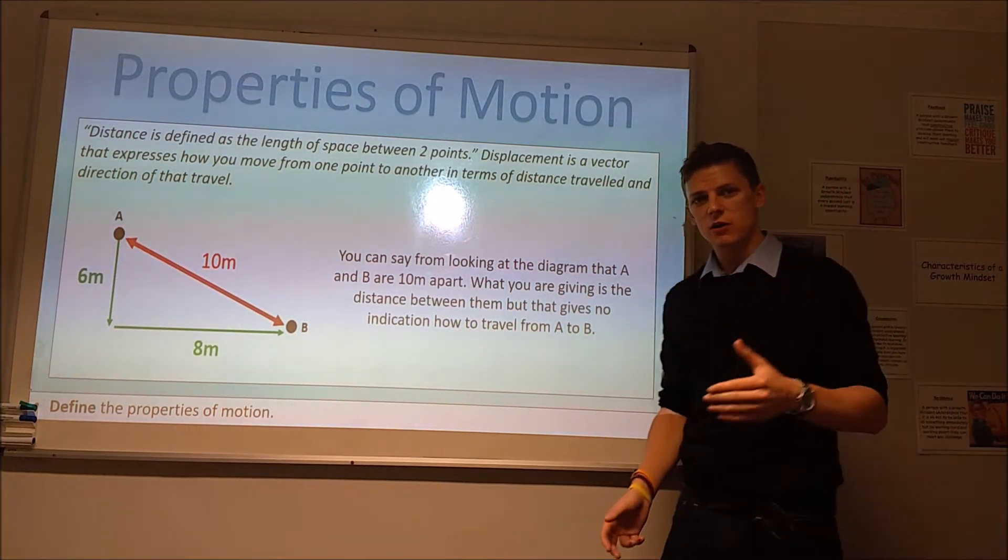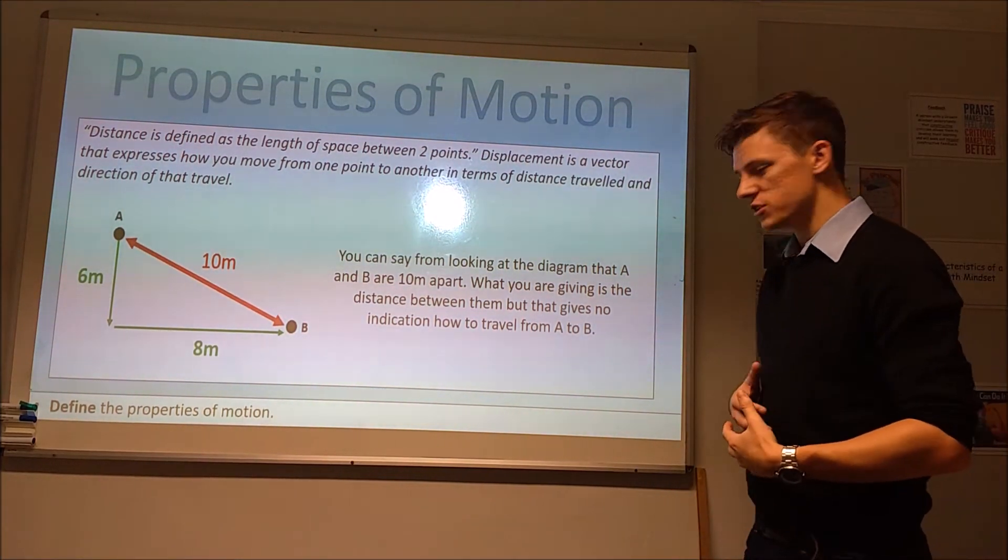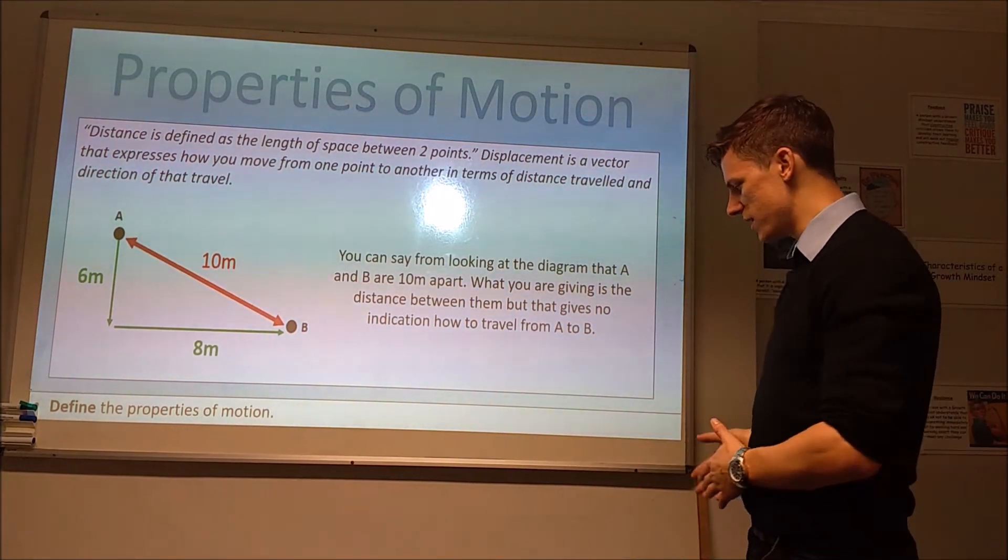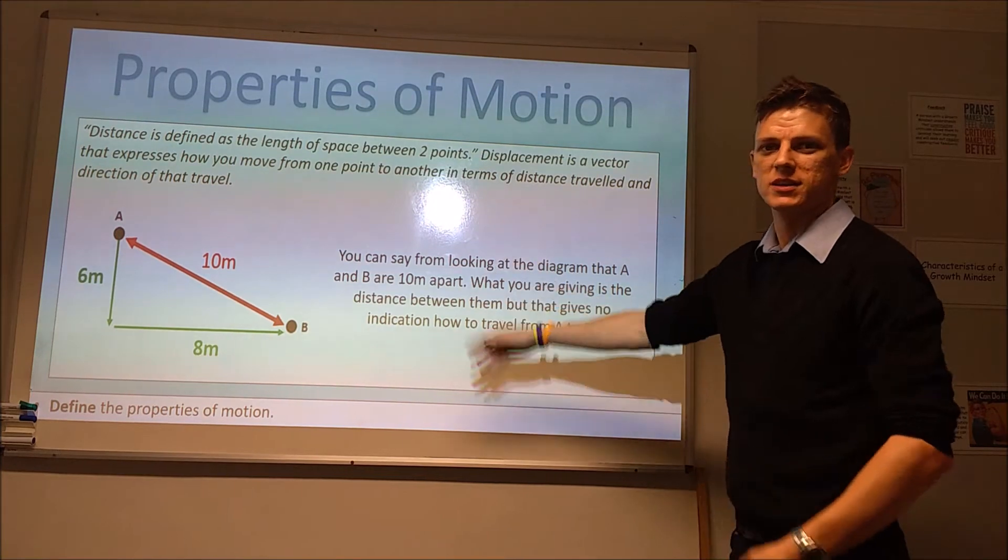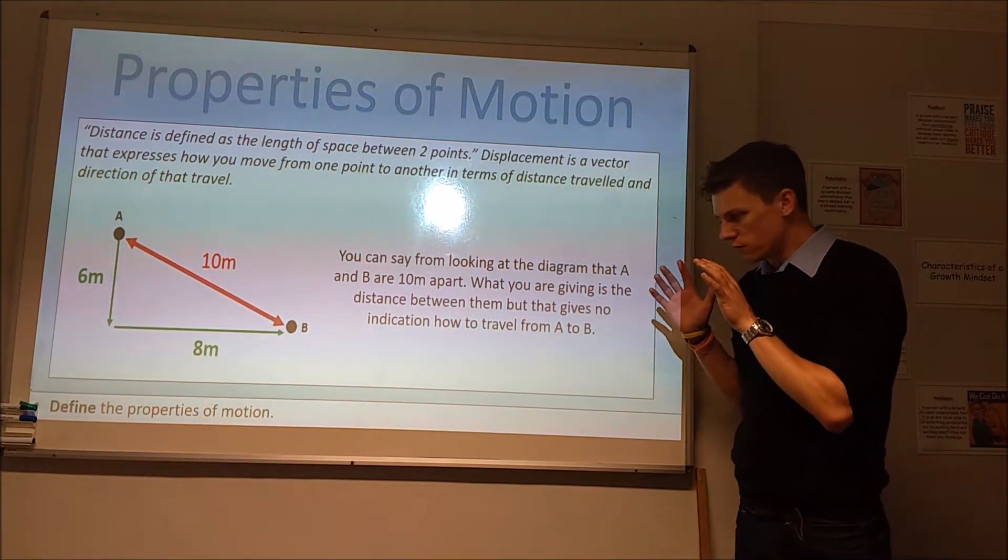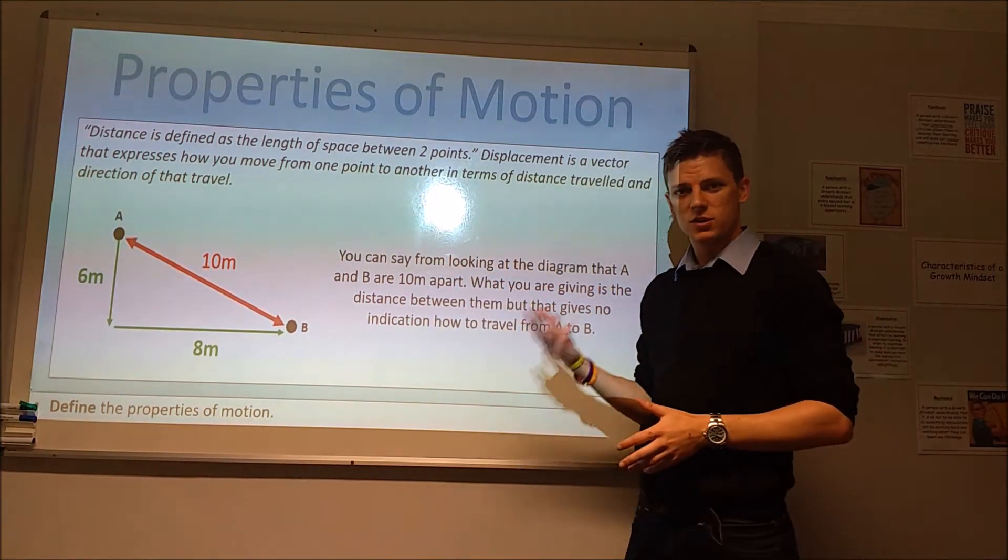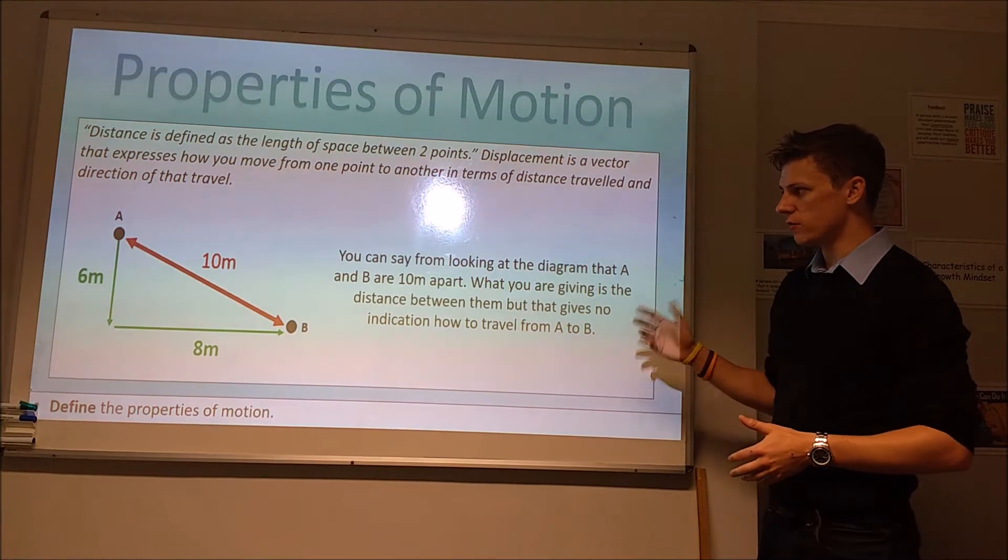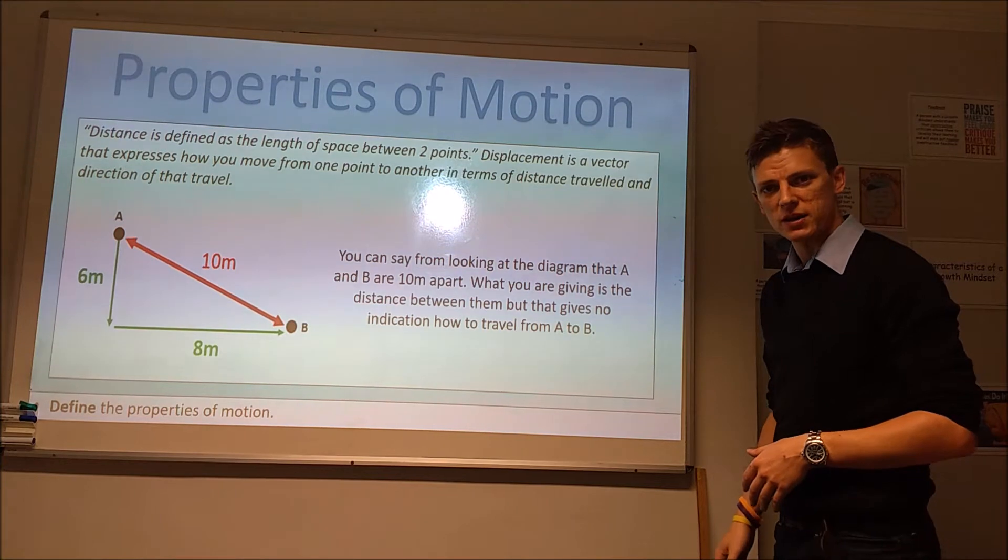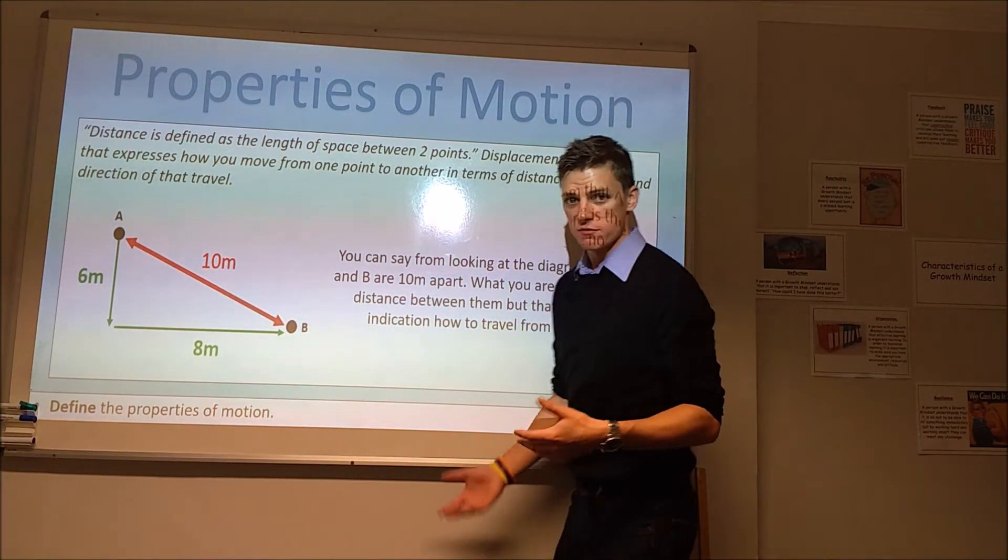When I give both the size or magnitude, as it's called, and direction, that's called a vector property. The vector equivalent of distance is called displacement. Displacement tells you how you go from one object to another. For me, it wouldn't just be that I need to go one meter to get to the board, it's one meter at an angle of, I don't know, 30 degrees or whatever you want to give it. One of the ways we often see vectors is we use our x, y, and z coordinate system as a way of telling us how to go from something.